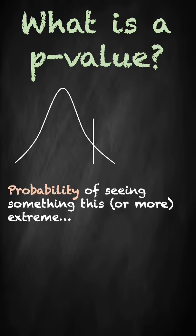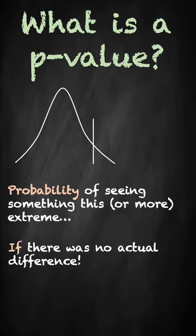So what we're going to calculate is a p-value, which is the probability of seeing something this or more extreme if there's no actual difference, if it really comes from the same population.